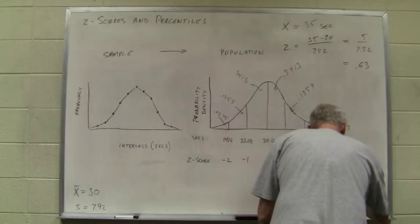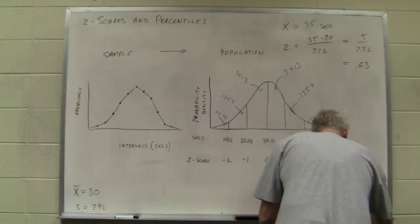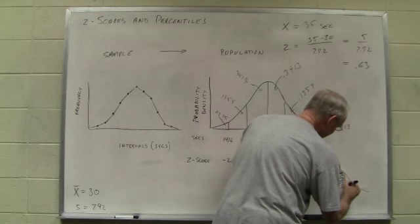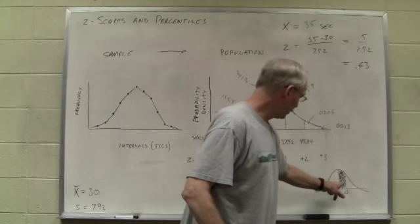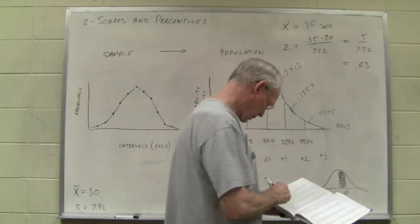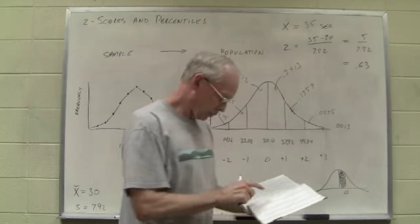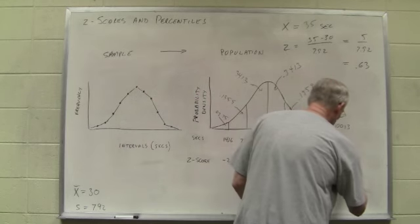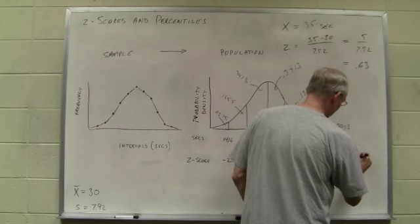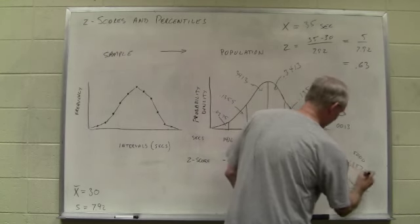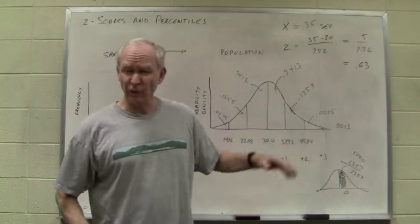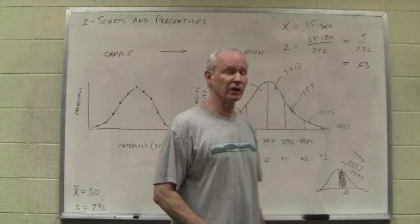We have a z-score of 0.63. Just to sketch this, we are not quite one standard deviation above the mean. We have 0.63 standard deviations above the mean. Column 5 will tell me what that area is, though. If I look up the z-score of 0.63, column 5 tells me that the area is 0.2357. Add that to the 0.50 on this side, we get 0.7357, or 73rd or 74th percentile. 73.57.